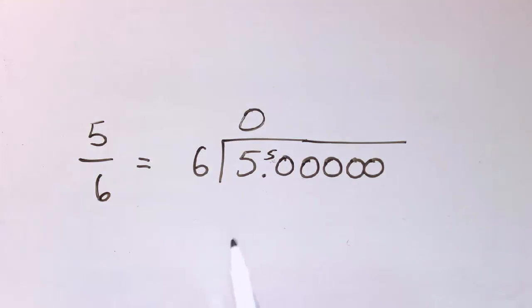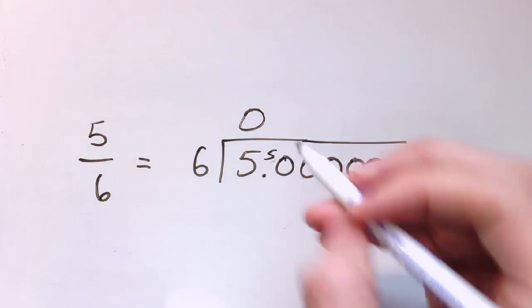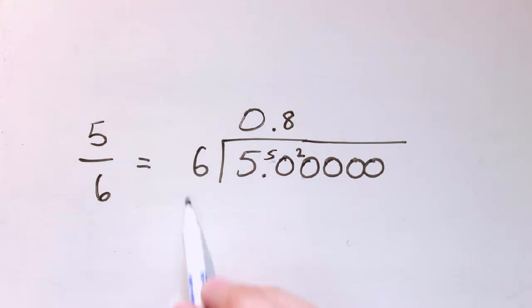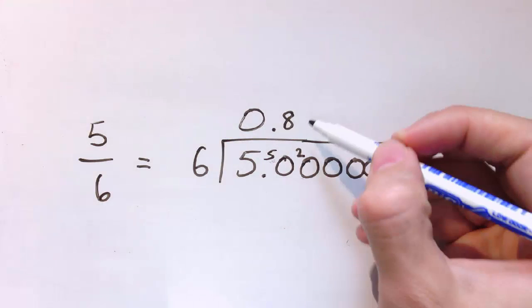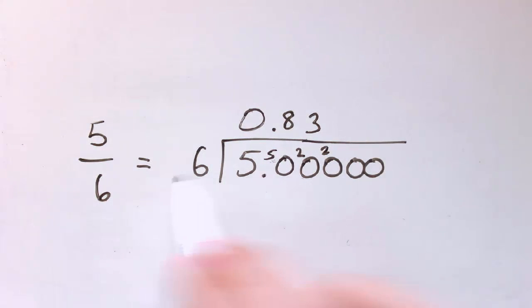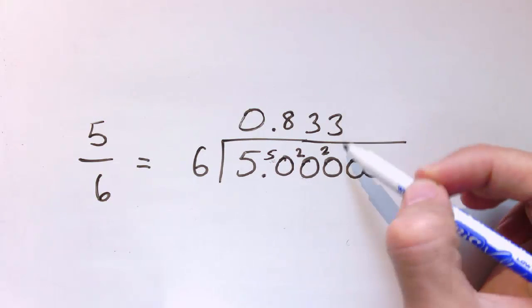So now 6 into 50, 6 times 8 is 48, so that's 8, and I've got 2 left over. 6 into 20 go 3 times, 3 times 6 is 18, and I've got 2 left over. 6 into 20 go 3, and I've got 2 left over.